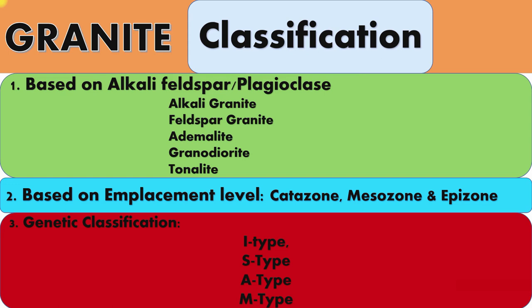The second classification is based on emplacement level: catazone, mesozone, and epizone. Catazone are deep granites, mesozone are intermediate, and epizone are shallow granites. Catazone granites are found in deeply eroded terrains, generally having concordant margins and showing strong foliation. This is the characteristic feature of catazone granites.